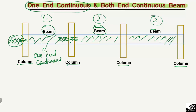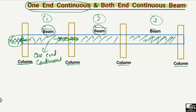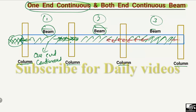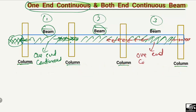Similarly, if we look at the third beam, this beam has been continued on one end, but it is discontinuous after this column on the other end. So this beam is also known as a one-end continuous beam, because one end is continuous while the other end of the beam is free — or we can say fixed at one end only.